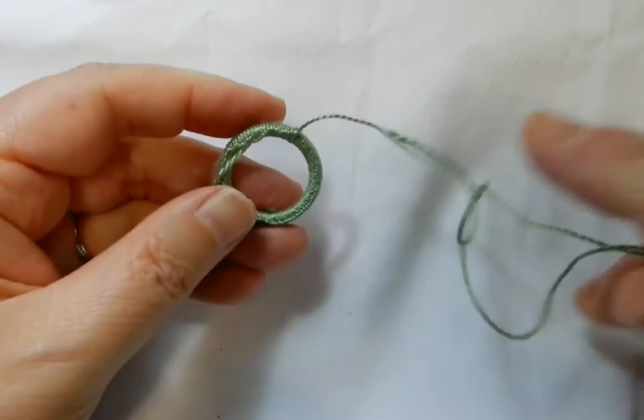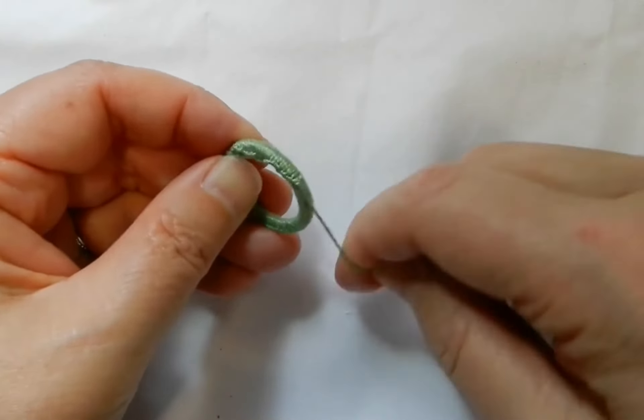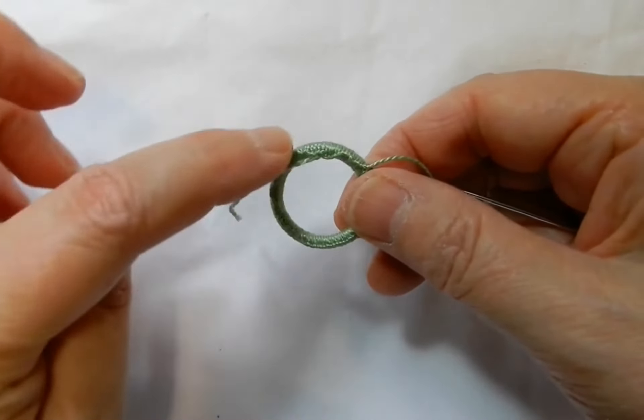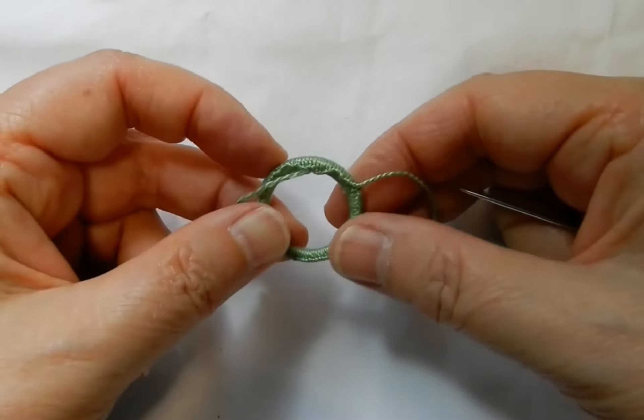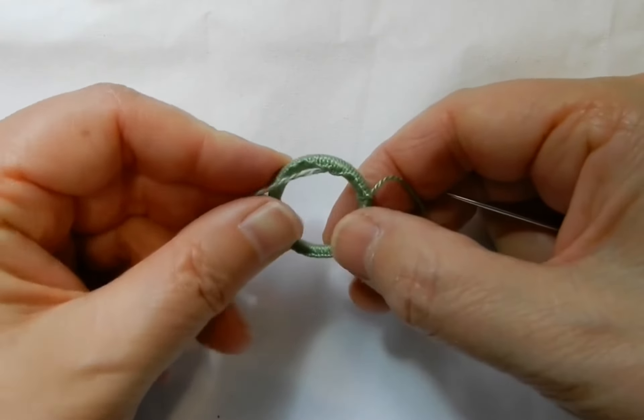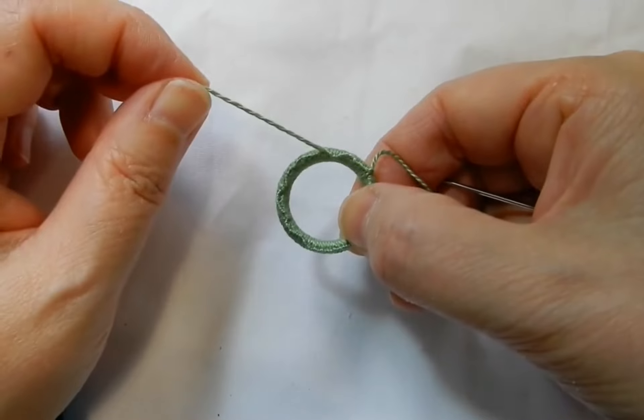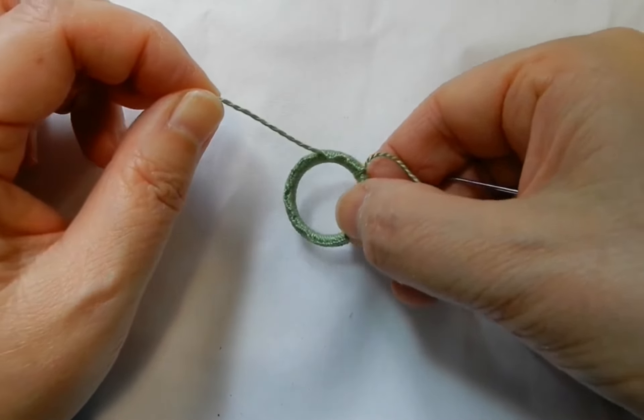There we go, that's nicely covered. You've got the ridge all showing on the back side of the ring, and there's the end that you worked over to hold it in place.